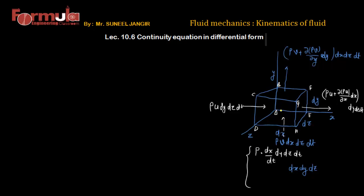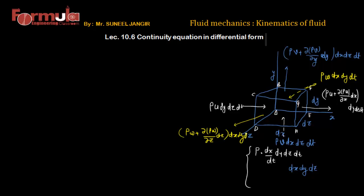Third, the amount of mass entering through face BFEA (from the back side) in the Z direction: ρ·W·DX·DY·DT, where W is the velocity in Z direction and DX·DY is the area of face BFEA. The mass leaving through the opposite face is [ρW + (∂(ρW)/∂z)·DZ]·DX·DY·DT.